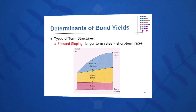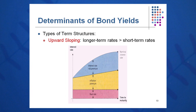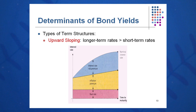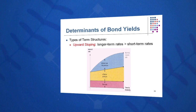If we look at the term structure, most times you will see it to be upward sloping. It's comprised of a real rate, an inflation premium, and an interest rate risk premium. Longer-term rates are typically greater than short-term rates in this upward sloping structure.